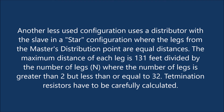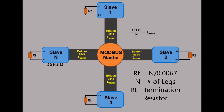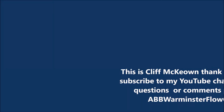Another less-used configuration uses a distributor with the slave in a star configuration, where the legs from the master's distribution point are equal distances. The maximum distance of each leg is 131 feet divided by the number of legs N, where N is greater than 2 but less than or equal to 32. Termination resistors must be carefully calculated: Rt equals N divided by 0.0067, where N is the number of legs and Rt is the value of the termination resistor.